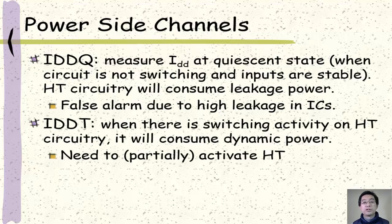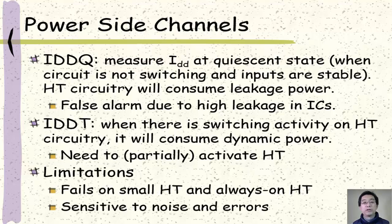Similarly, we can also measure the transient supply current. When the hardware trojan is activated, it has additional switching activity and this will cause an increase in dynamic power, so it can be caught. For this to work, we need to find ways to activate the hardware trojan or at least activate part of it. For power side channels, there are a couple of limitations. First, it fails to capture small hardware trojans or always-on hardware trojans because you cannot distinguish them from the power side channel trace. They are also very sensitive to noise, errors, and fabrication variations.